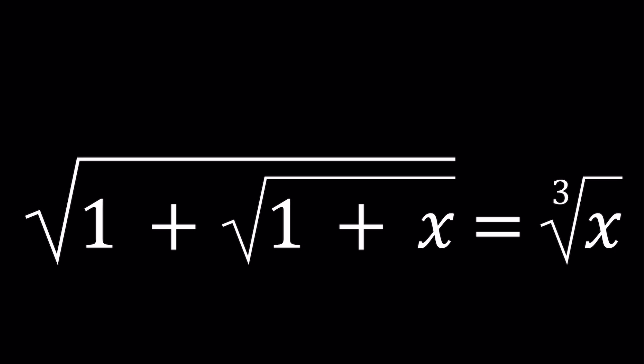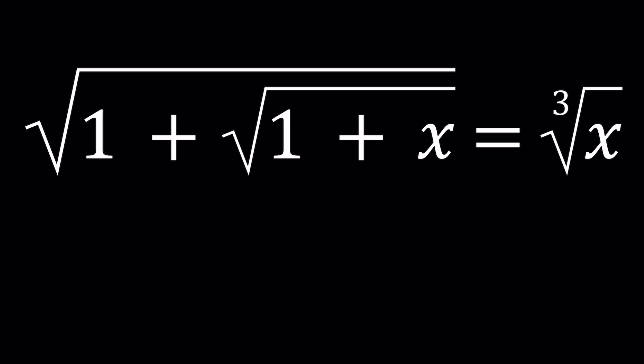To solve this problem, I'm going to use substitution. Let's set the square root of 1 plus x equal to a and the cube root of x equal to b. I want to use two variables because I want to come up with a system and then solve that system in two variables.